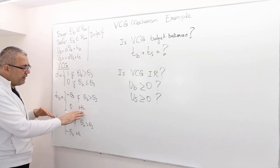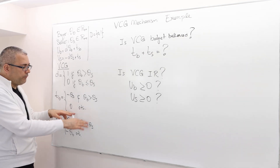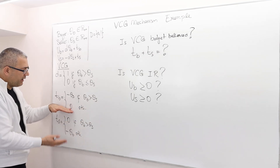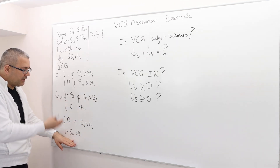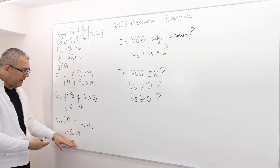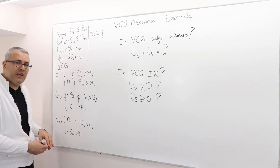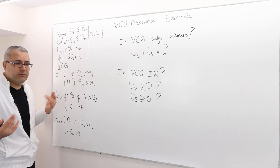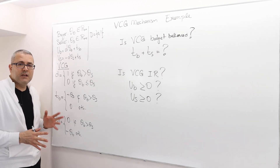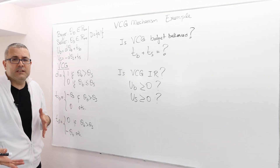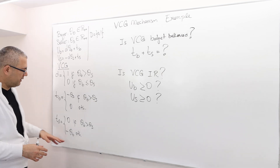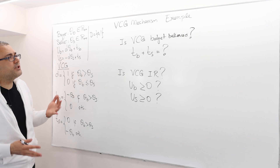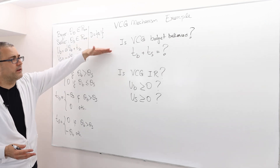And when there's no room for trade — meaning theta_B is less than or equal to theta_S — the buyer is going to pay nothing, and the seller is supposed to make a payment of amount theta_B. Who receives this money? Again, nobody. So the money is burned, wasted. The transfer functions are weird, which is exactly our next point.